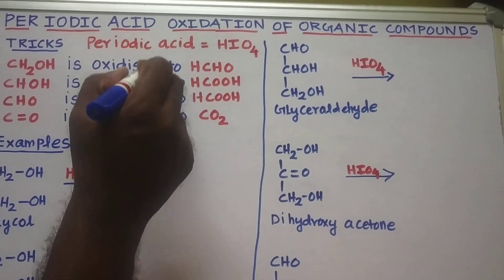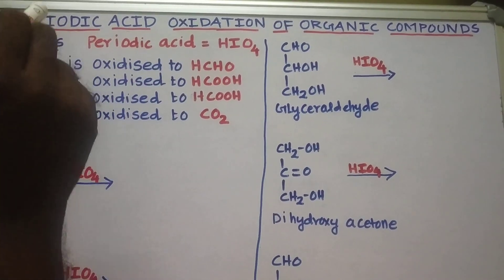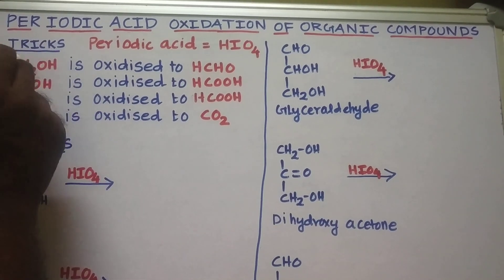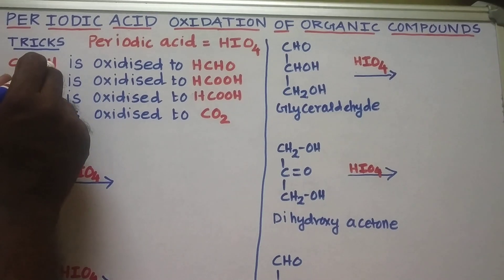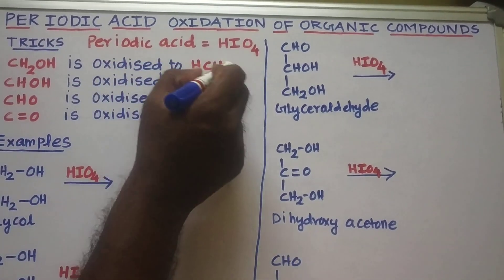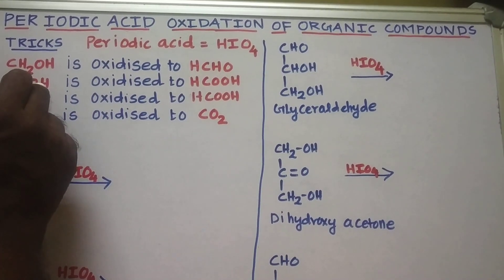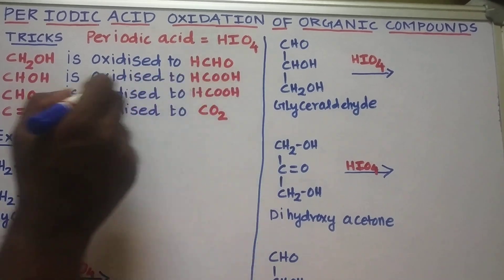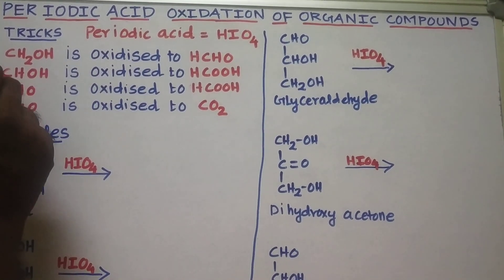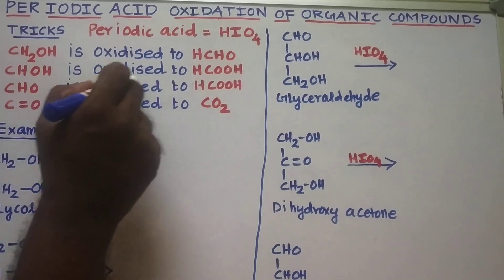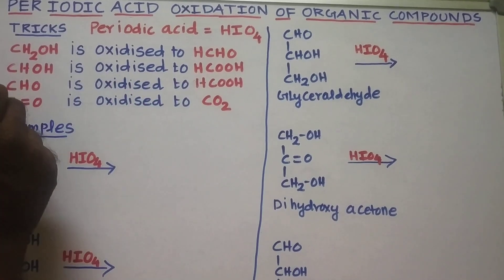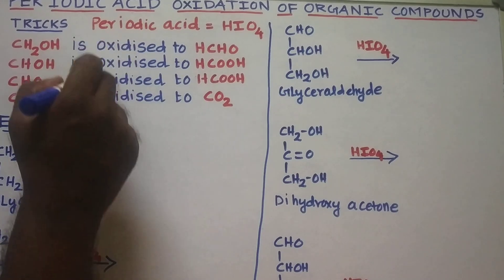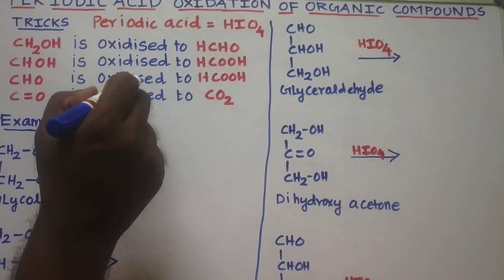To predict the nature of the product, we are going to use an excellent trick. Using this trick, we can predict the product very easily. The CH2OH group, meaning the primary alcohol group present in the organic compound, is oxidized to formaldehyde. The CHOH group, meaning the secondary alcohol group, is oxidized to formic acid. Similarly, the aldehyde group present in the organic compound is oxidized to formic acid. And the ketone group, C=O, present in the organic compound is oxidized to carbon dioxide. So this is a very useful trick.